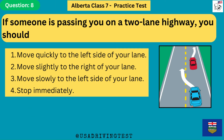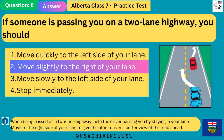If someone is passing you on a two-lane highway, you should: 1. Move quickly to the left side of your lane. 2. Move slightly to the right of your lane. 3. Move slowly to the left side of your lane. 4. Stop immediately. The answer is 2: move slightly to the right of your lane. When being passed on a two-lane highway, help the driver passing you by staying in your lane and moving to the right side to give the other driver a better view of the road ahead.